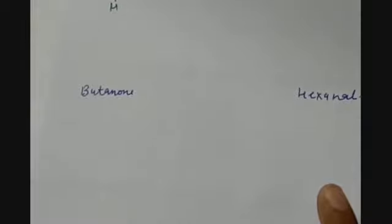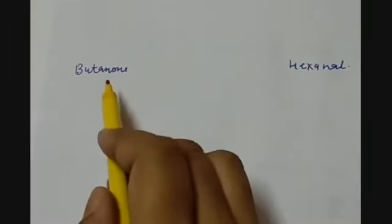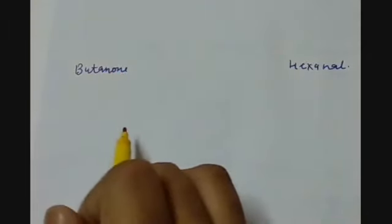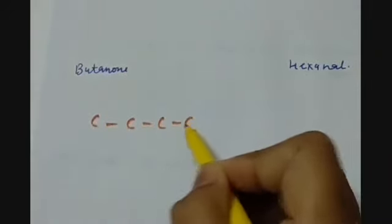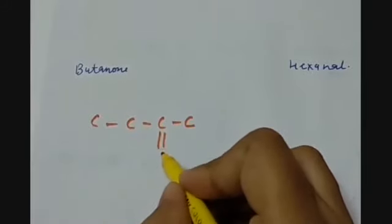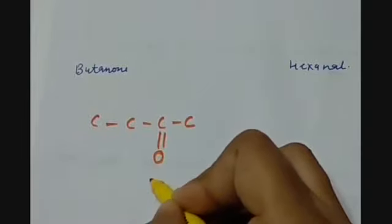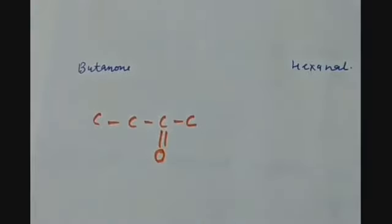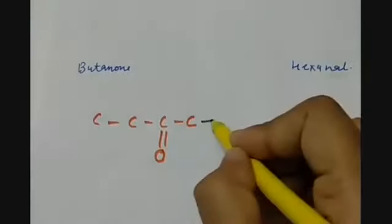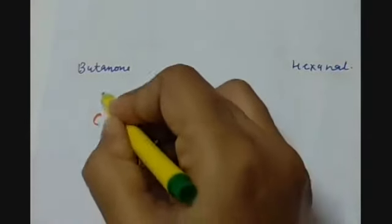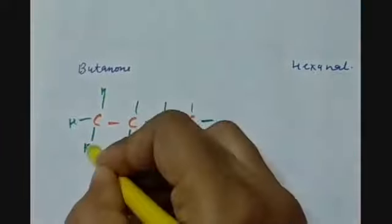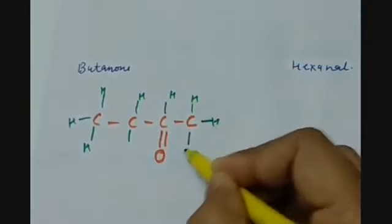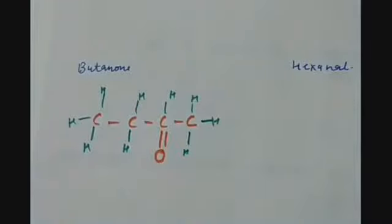For butanone, the suffix 'none' indicates a ketone functional group. Since the ketone group is not a terminal group, it comes in between. There are 4 carbon atoms total. With the ketone group at the second carbon — C double bond O — the rest of the valencies of the carbon atoms are fulfilled by hydrogen. This is the structure for butanone.